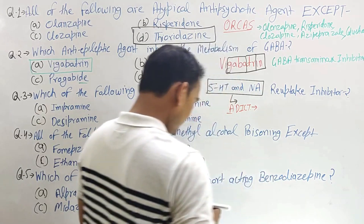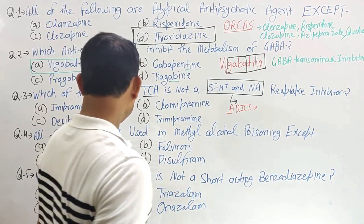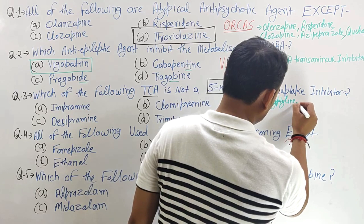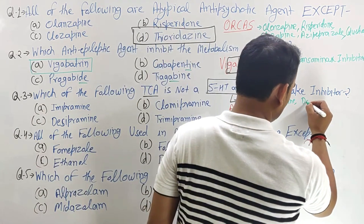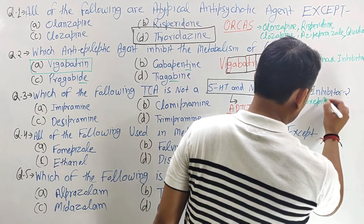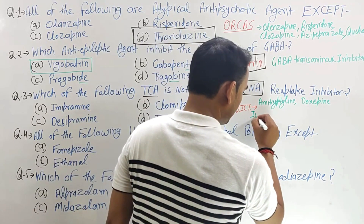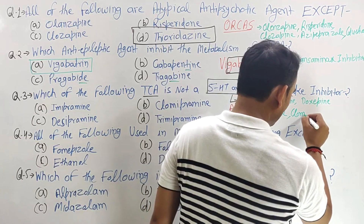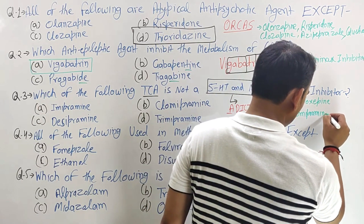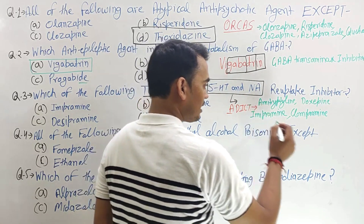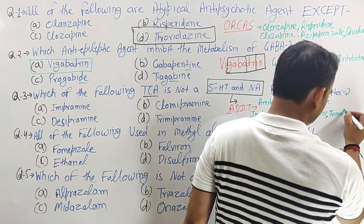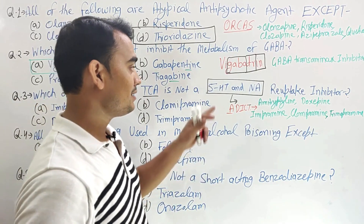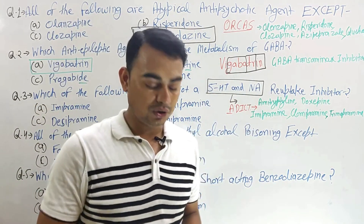Let's take each letter. A for amitriptyline. D for doxepin. I for imipramine. C for clomipramine. And T for trimipramine. These are the five drugs which mainly act by inhibiting both 5-HT and noradrenaline.